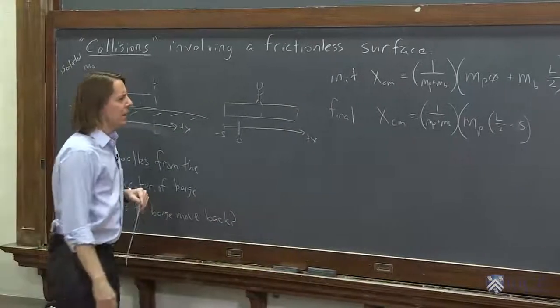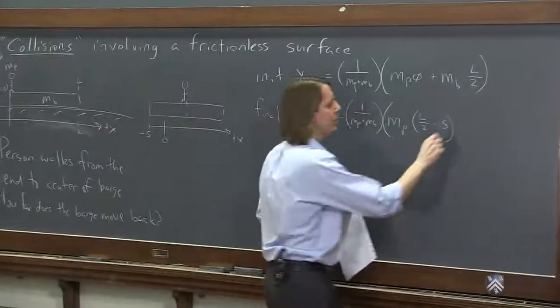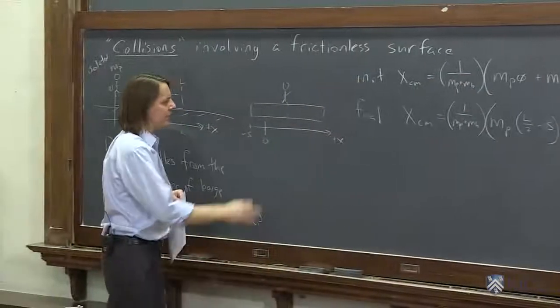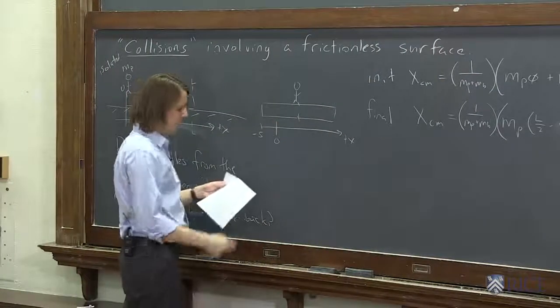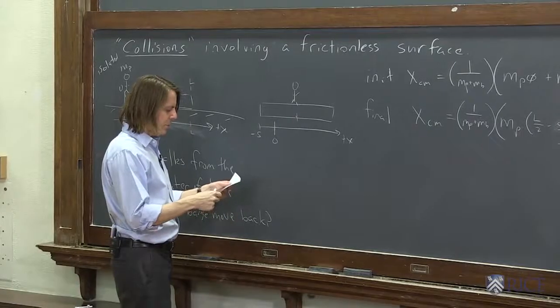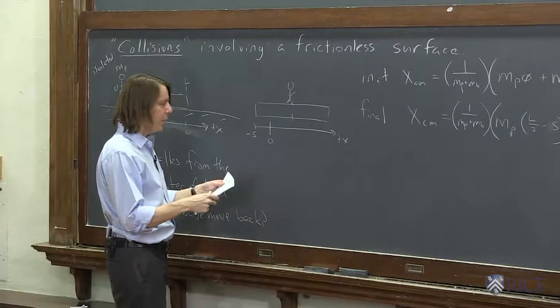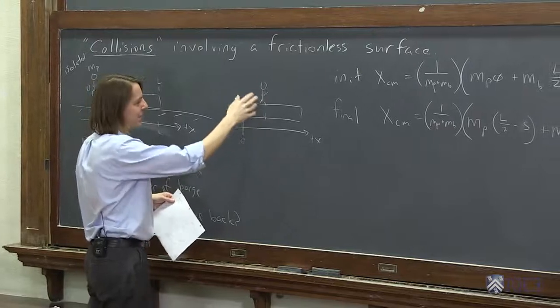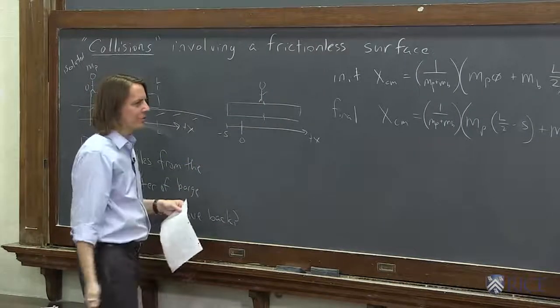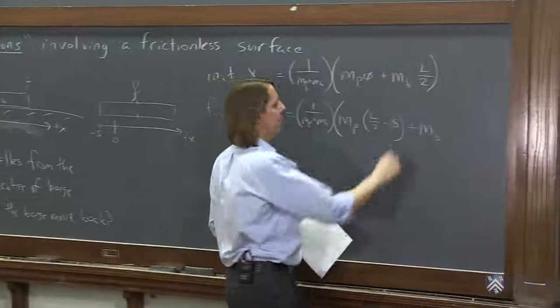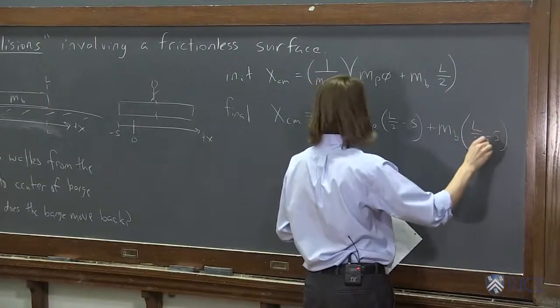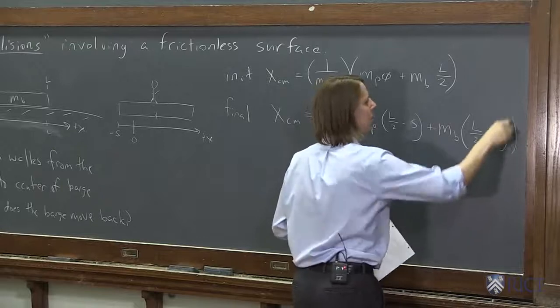Plus the contribution of the barge, and let's see, the center of the barge is there, so it is also l over 2 minus s. Yes, I forgot. If I walk to the center, then our masses are at the same place. So mb times l over 2 minus s.